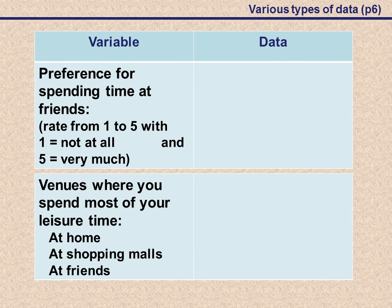Let's consider two more variables, namely the preference for spending time with friends, and venues where you would spend most of your leisure time. For the first variable, we are given on a rating scale from 1 to 5, where 1 is not at all and 5 is very much. The responses that we can expect would be something along the lines of a 5 or a 4 or a 3, anything like that.